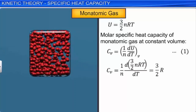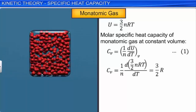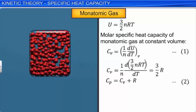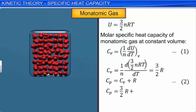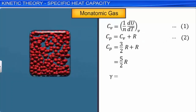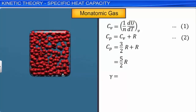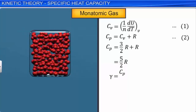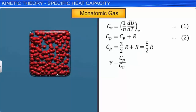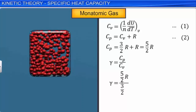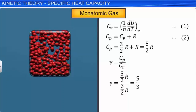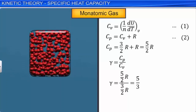As per equation 2, Cp = Cv + R = (3/2)R + R = (5/2)R. Gamma is the ratio of Cp to Cv. Substituting, γ = (5/2)R / (3/2)R = 5/3 ≈ 1.67. Thus for monoatomic gases, the ratio of specific heat capacity is equal to 1.67.